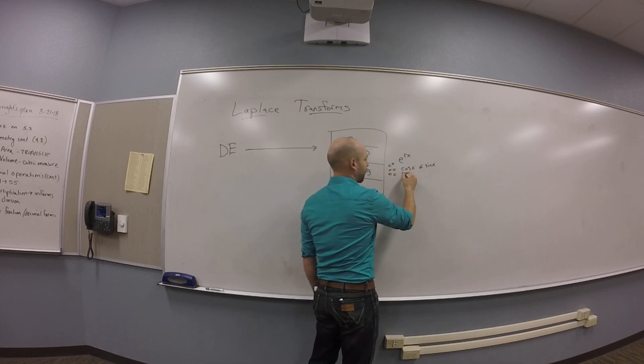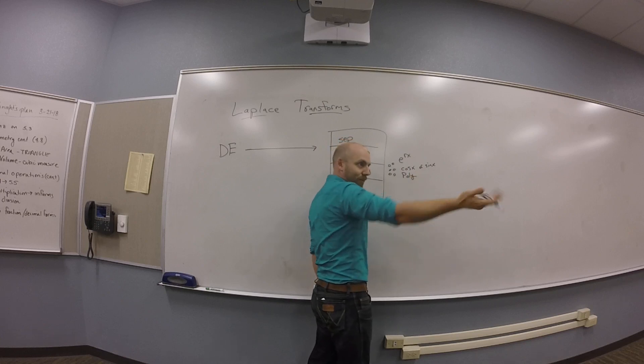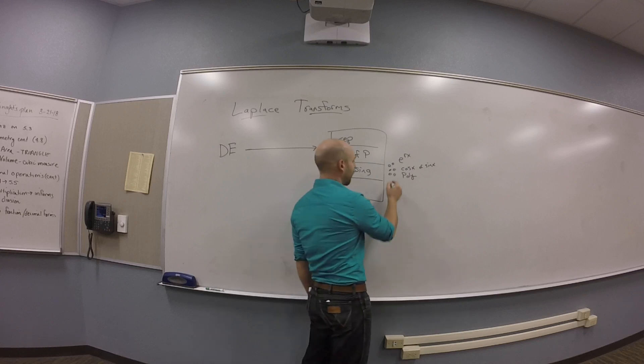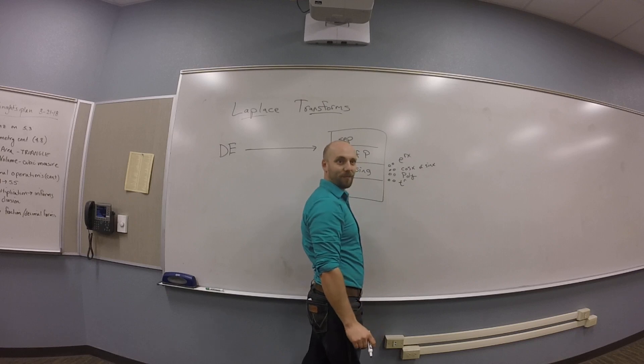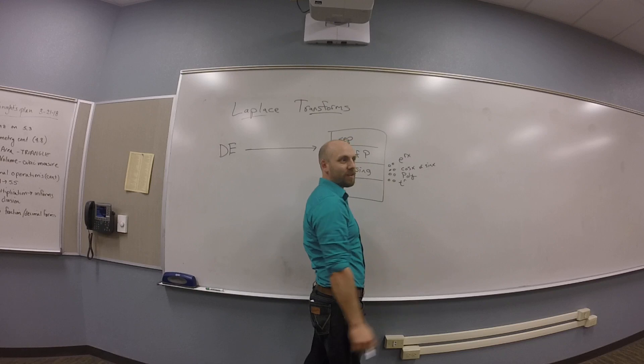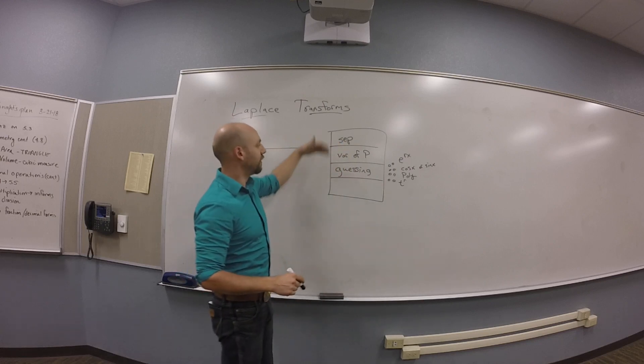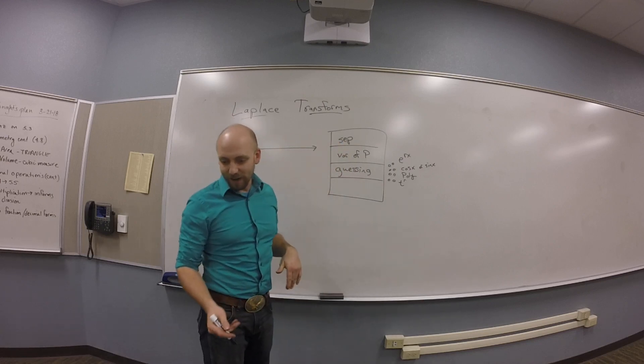You might guess polynomial type things, right? Like you might guess a plus bx plus cx squared or something. If you were thinking a little bit, you might guess a t to the r given an appropriate form. You just throw stuff at the wall and see if it sticks, basically. Guessing is not a traditionally good method, but it is one that solves a lot of differential equations. So these are basically the techniques I have right now.